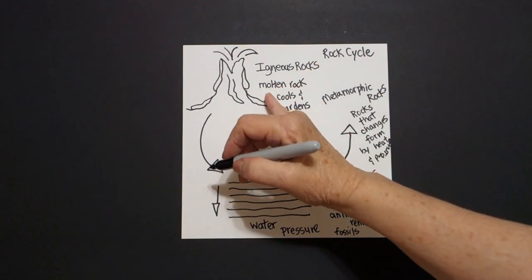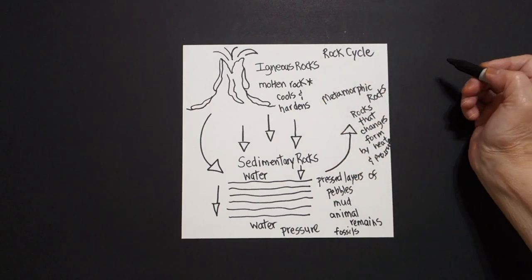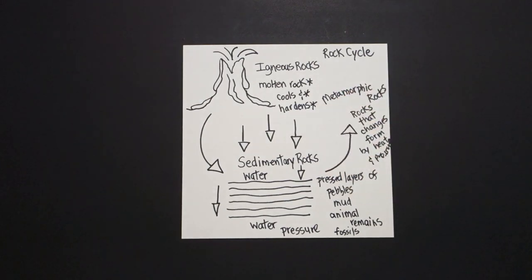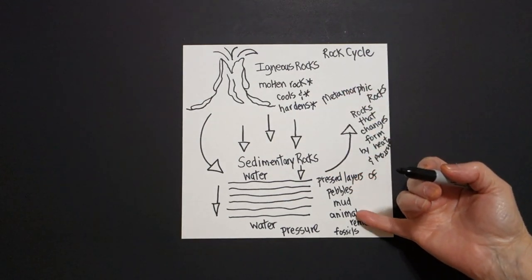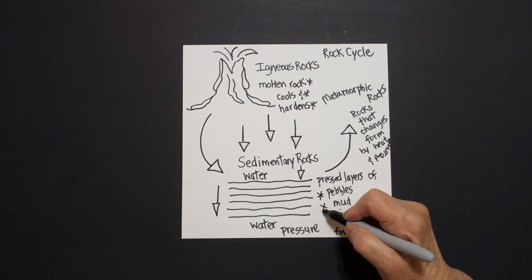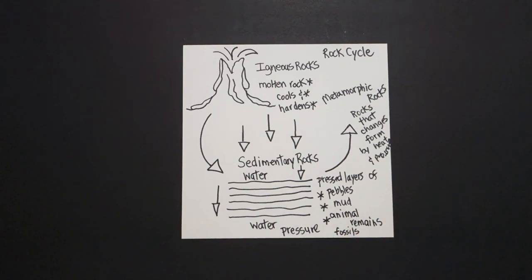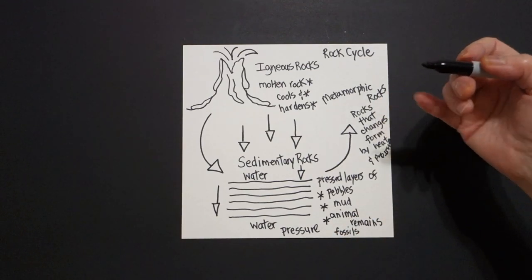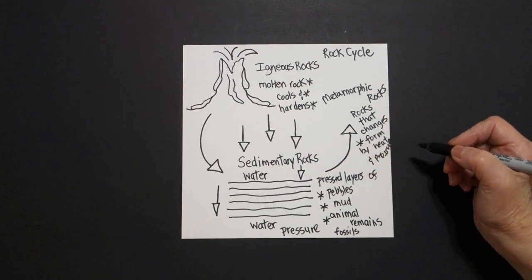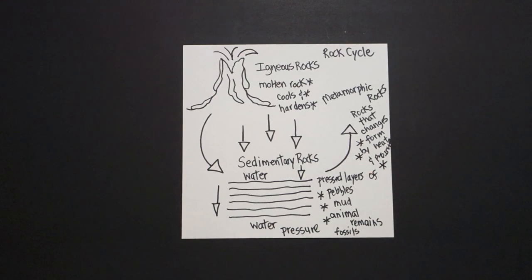So that I don't forget — this is important. I'm going to go one, two, three straight lines for each item. The important information: pressed layers of pebbles, mud, and animal remains — metamorphic rocks are rocks that change form by heat and by pressure.